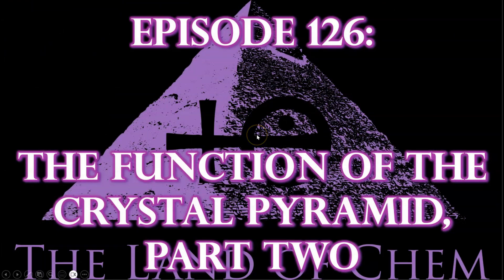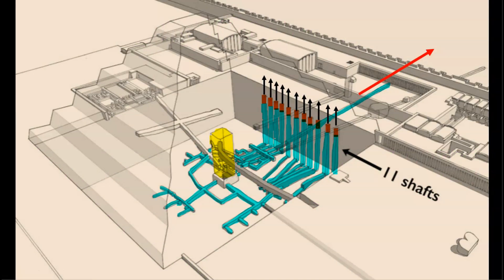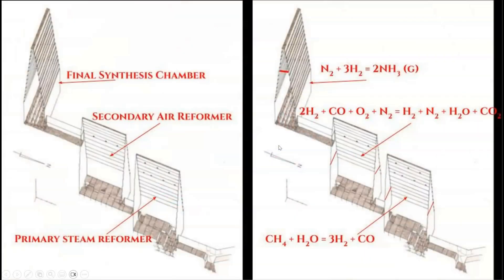All right everyone, here we go with tonight's episode. And in episode 125, I explained how the Step Pyramid of Saqqara was used to extract natural gas deposits from the bedrock and pump them through a distribution network for both domestic and industrial applications. And in this abundant supply of methane, they possessed one of the most valuable synthesis gases that we are still utilizing today in a process known as steam reforming, which converts methane gas and water vapor into hydrogen and carbon monoxide. This is the exact same chemical reaction that was occurring within the primary chamber of the Red Pyramid, the primary steam reformer, providing the source of hydrogen that would be reacted with nitrogen within the final synthesis chamber to produce ammonia gas and the aqueous ammonia solution.